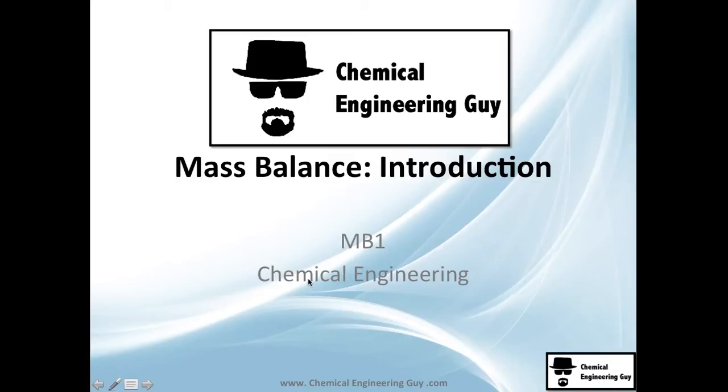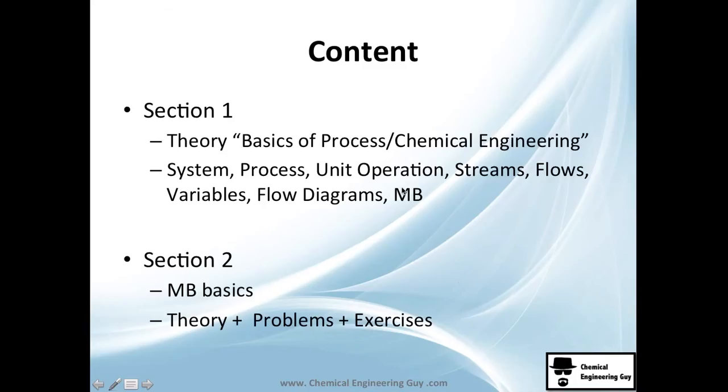Sorry about that. And yeah, let's continue with the next chapter, which is essentially only two sections. The content here is section 1, which is the theory, which I like to call the basics of process or chemical engineering. We're going to see a lot of stuff like system, process, unit operation, streams, flows, variables, flow diagrams, and finally theory or mass balance.